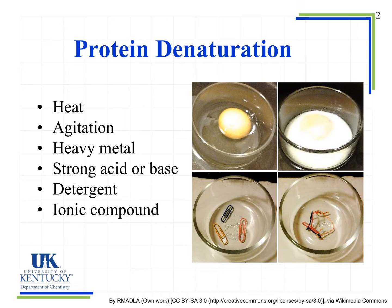The things that most often affect protein structure are the following. If we heat something up, remember those interactive forces between parts of the protein are fairly weak, just like our intermolecular forces were fairly weak. So it's fairly easy with a little bit of heat to break them apart. Agitation will also break those apart — when you're beating eggs, you're agitating them, and what you're really doing is starting to break down some of the proteins in that egg.